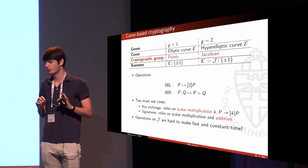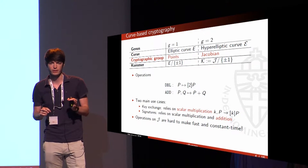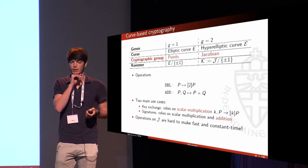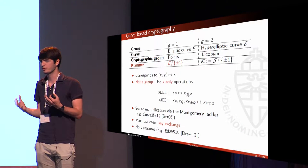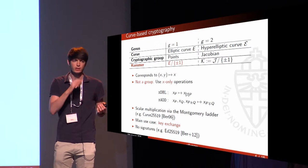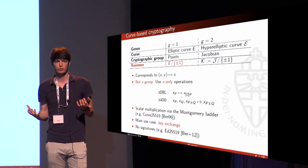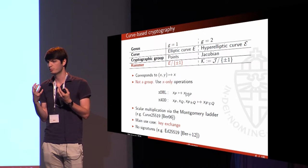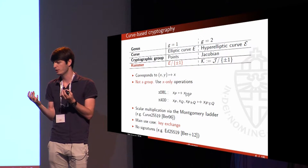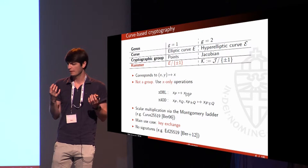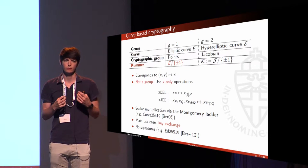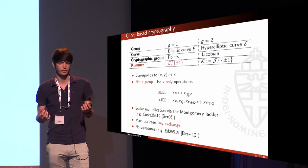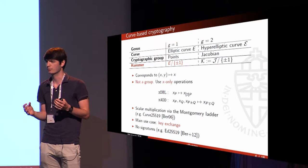Operations on Jacobians are generally not as easy to make fast as operations on elliptic curves, and also not as easy to make constant time, which is important for side-channel attacks. One idea is to take the points on the curve and identify points with their inverses — in practice we can represent points by two finite field elements X and Y, and just drop the Y coordinate. By doing that we lose the group structure, but we still have X-double and X-add operations, which allow us to create a scalar multiplication routine.